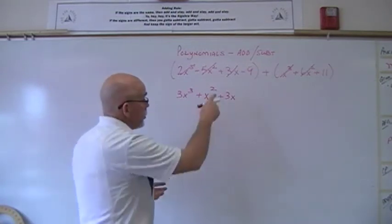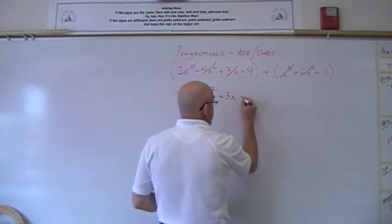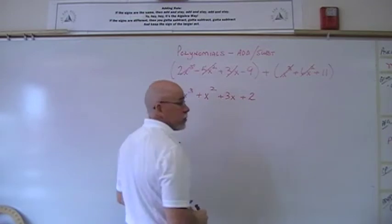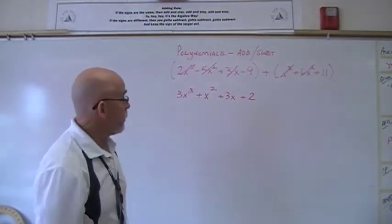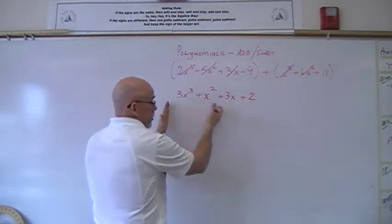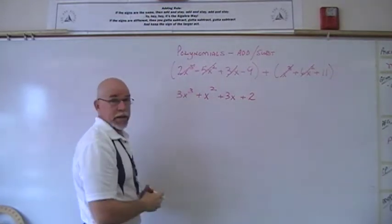Now the next thing I look for is the constant terms, negative nine and 11. The signs, again, are different, so I subtract 11 and negative nine, and then keep the sign of positive 11 because it's bigger. So that's it. Any more like terms? Nope, that's it. That's how you add.